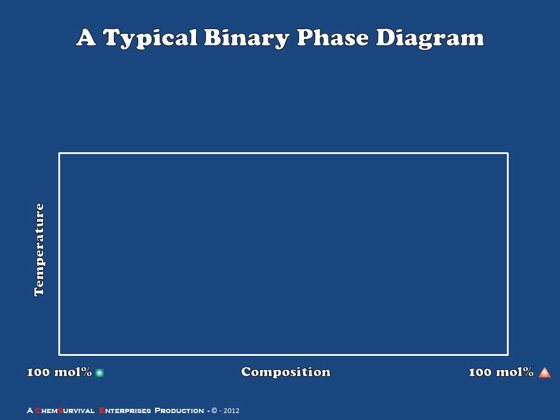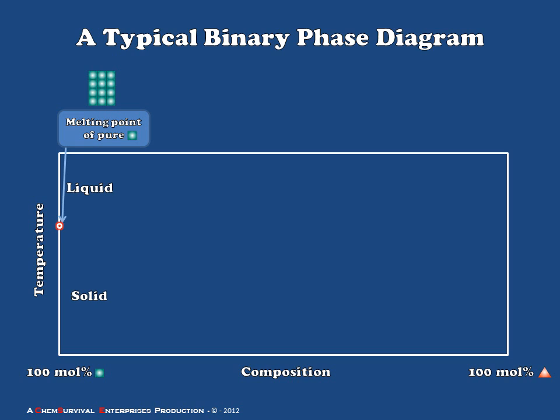Let's begin with our blank phase diagram, looking at the left-hand vertical axis. This represents the situation where we have 100 mole percent of our compound of interest — the green squares. On the temperature axis, we expect to see a phase transition at the temperature at which our pure compound converts from solid to liquid: the melting point of our pure compound. Anything below this temperature is solid; anything above is liquid. There's a single transition temperature. As we move from left to right and add a little of the red compound — our impurity — the melting point is depressed, as our previous discussion predicted.